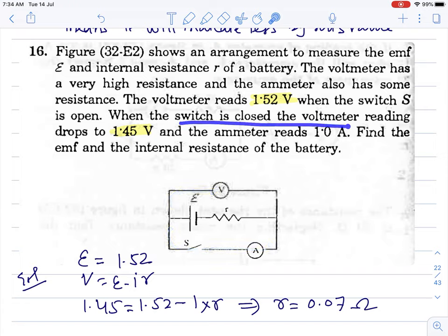When the switch is closed, voltmeter reading drops to 1.45V. Now it's the terminal potential because current will flow here, so some drop will occur here. So it reads terminal potential V, 1.45. And the ammeter reads 1A. Find EMF and internal resistance r.